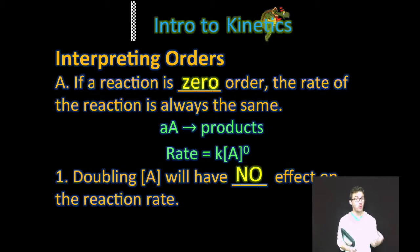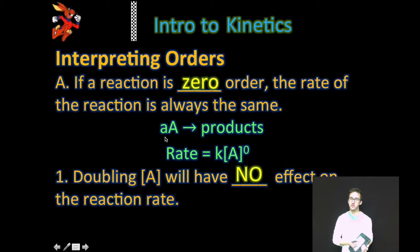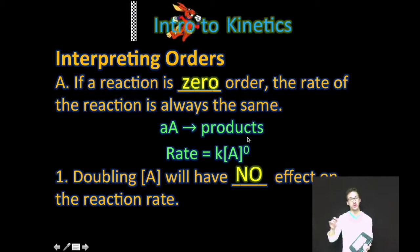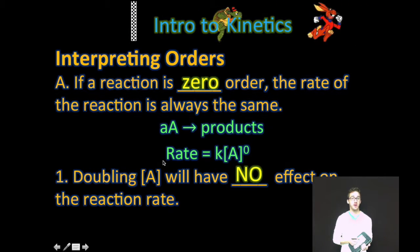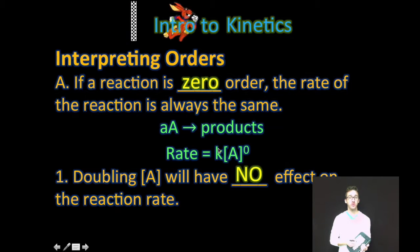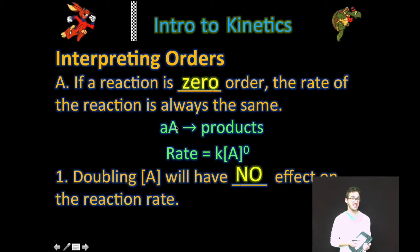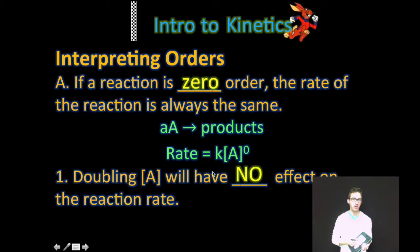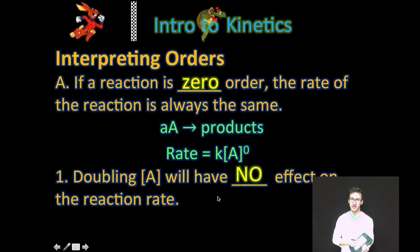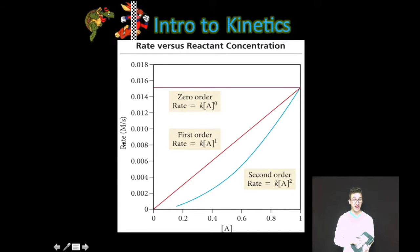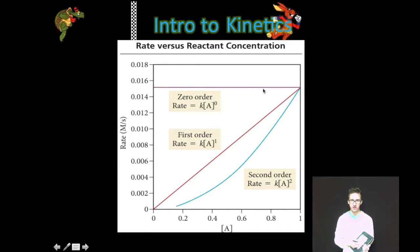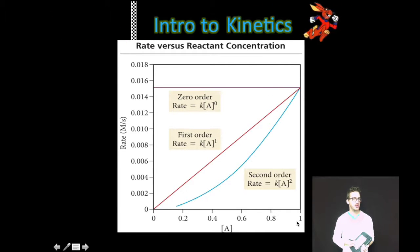Now let's talk about what those exponents or orders mean. If a reaction is zero order, the rate of the reaction is always the same. We would express the rate law of a zero order reaction as equal to the rate constant times the concentration of our reactant A to the zero order. A reactant that is zero order will have no effect on the rate of the reaction because anything raised to the zero power is one. So as you look at this graph of rate against concentration, no matter how we change or increase the concentration of that reactant, the rate remains constant.